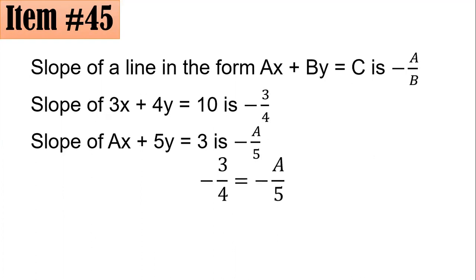So equating -3/4 with -a/5 and multiplying both sides by -5, you will arrive to 15 fourths as the value of A. The correct answer here is 15/4, letter D.